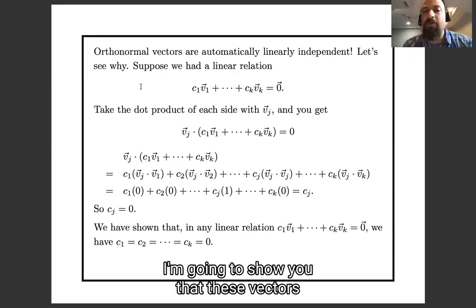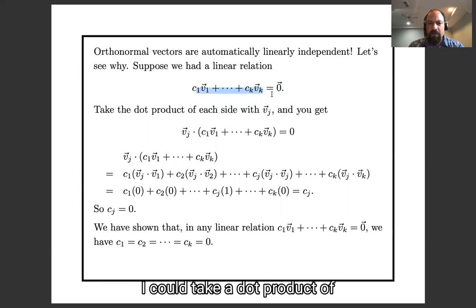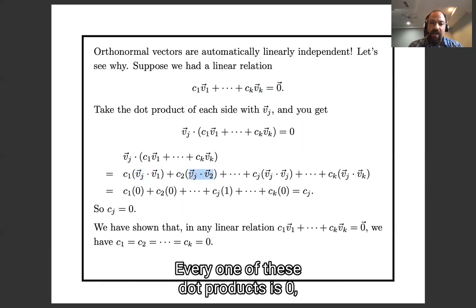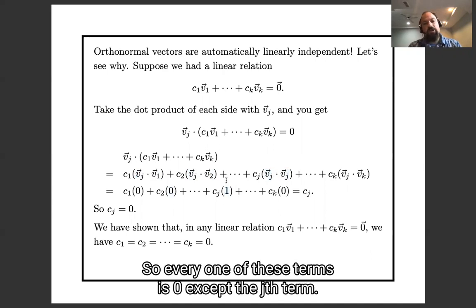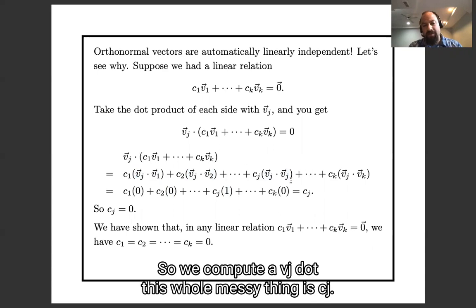So that turns out to be right, and let's see it in algebra. I'm going to show you that these vectors are linearly independent. Suppose I had a linear relation c1v1 + ... + ckvk = 0. I could take a dot product of each side with the vector vj. So vj dot this zero vector will be zero. And if I distribute that out, I get c1(vj · v1) + c2(vj · v2) + ... + cj(vj · vj) + ... + ck(vj · vk). Every one of these dot products, vj · v1, vj · v2, et cetera, every one of these dot products is zero, except for vj · vj, which is one. So every one of these terms is zero except the jth term, and the jth term gives me cj.